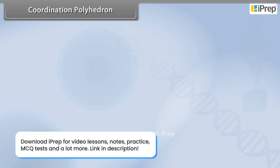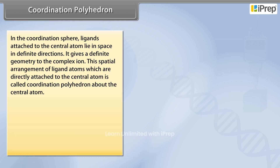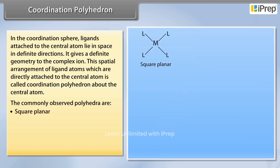Coordination Polyhedron: In the coordination sphere, ligands attached to the central atom lie in space in definite directions. It gives a definite geometry to the complex ion. This spatial arrangement of ligand atoms which are directly attached to the central atom is called the coordination polyhedron about the central atom. The commonly observed polyhedra are square planar,